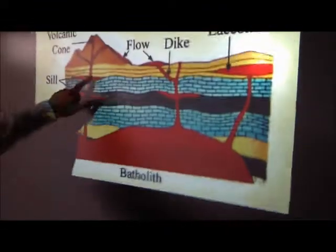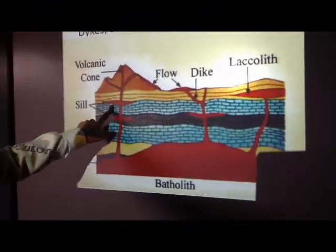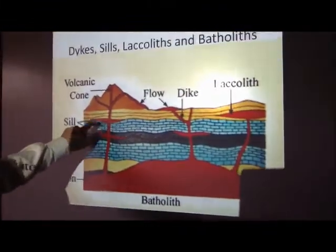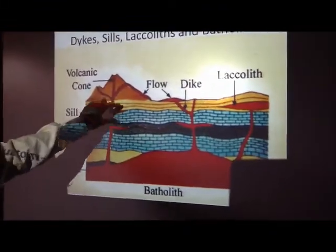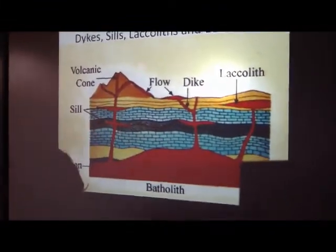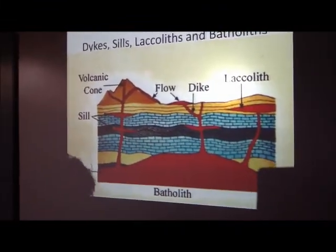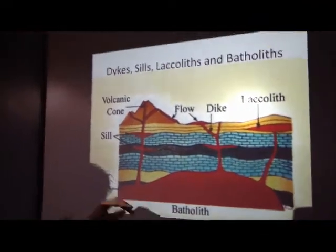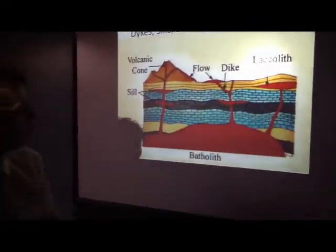You've got sills here. Magma solidifies into horizontal sheets between layers of pre-existing rocks, forming a low ridge.